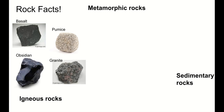Obsidian and granite are both igneous rocks that form and cool below ground. A key tip-off is that if it forms below ground, it's going to be shinier. You can see that obsidian and granite have had more time to cool — they've cooled more slowly, and that's what gives them a shinier appearance.